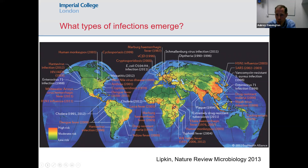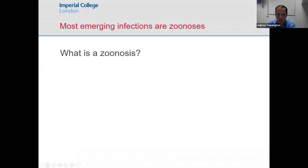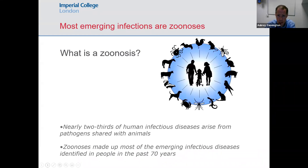What types of infections emerge more generally? If you look at the map, you'll see lots of different types of infection, but the majority are zoonoses — infections which come from animals. Nearly two thirds of human infectious diseases arise from pathogens shared with animals. In the last 70 years, zoonoses have made up the vast majority of emerging infections, so this relationship with animals is very important.